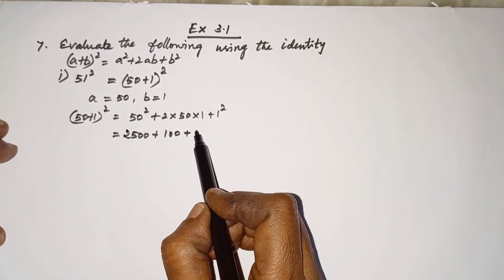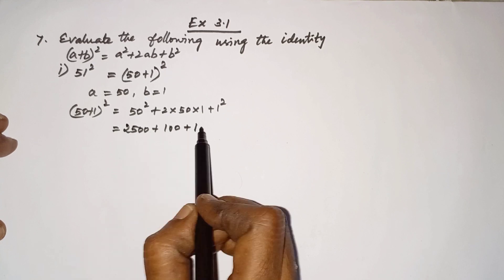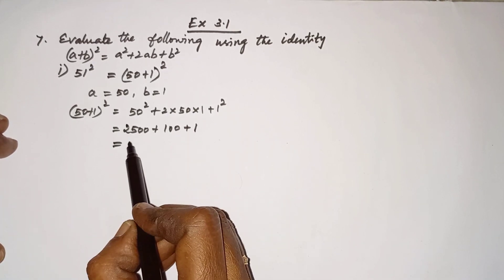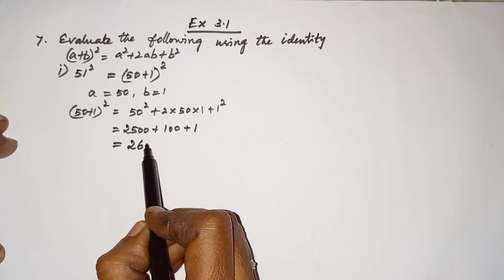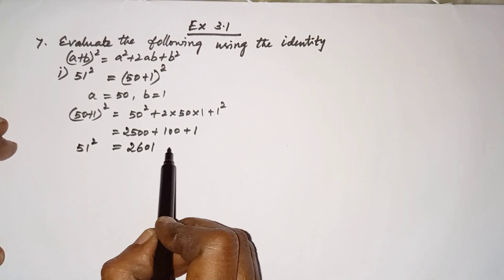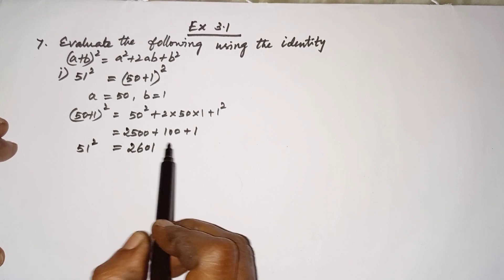1² = 1 × 1 = 1. Now we have to add these three numbers: 2500 + 100 + 1, so the answer is 2601. So 51² = 2601, that's all.